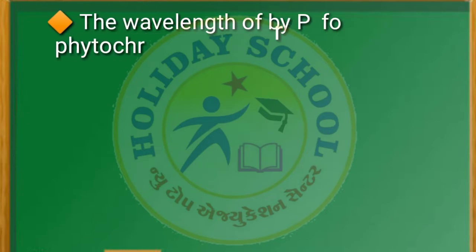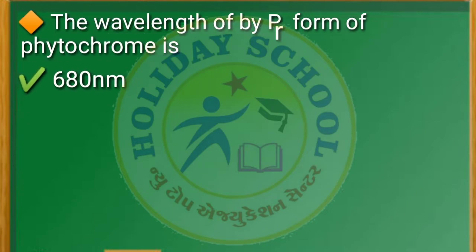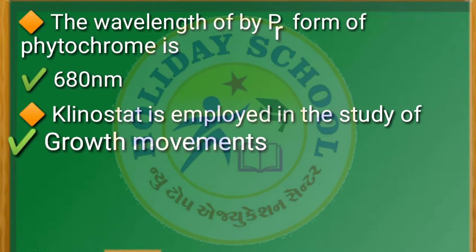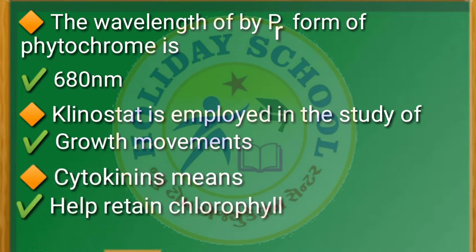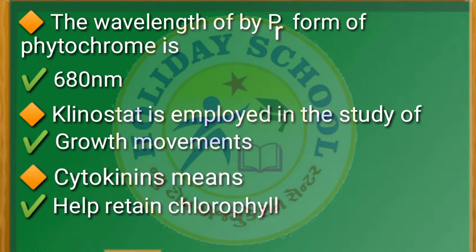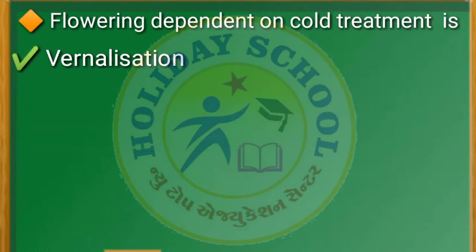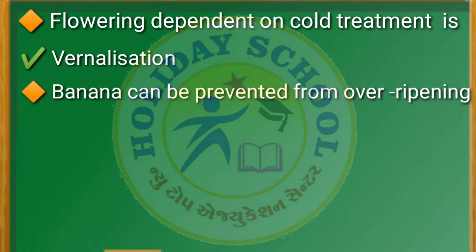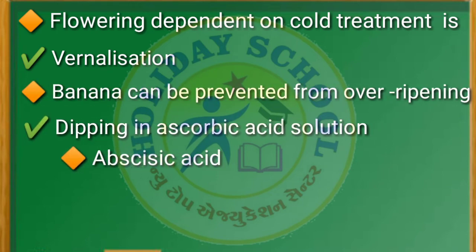Next question: foolish seedling disease of rice led to the discovery of — the answer is gibberellin. Next question: the wavelength of Pr form of phytochrome is — the answer is 680 nm. Next question: clinostat is employed in the study of — the answer is growth movements.